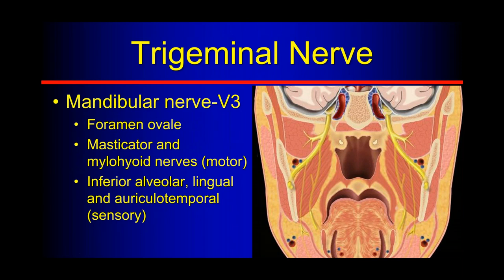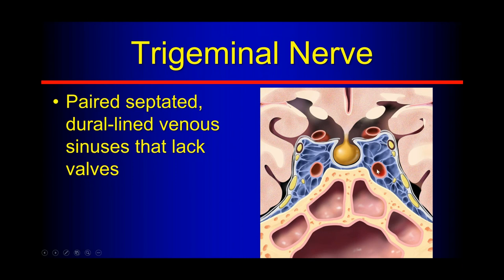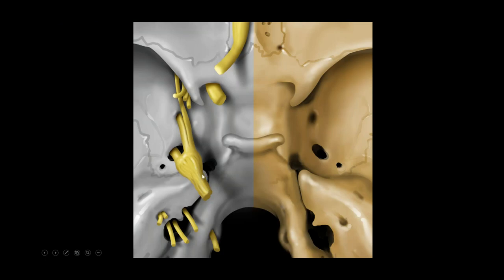In the cavernous sinuses — valveless venous sinusoids on both sides — the most medial object is the carotid, the most medial nerve is cranial nerve six, and then we have nerves three, four, V1, and V2 going down the lateral wall. Some argue these nerves are not actually in the cavernous sinus but in the fascial slips of the lateral wall. Cranial nerves three, four, V1, and six all go through the superior orbital fissure toward the orbit.